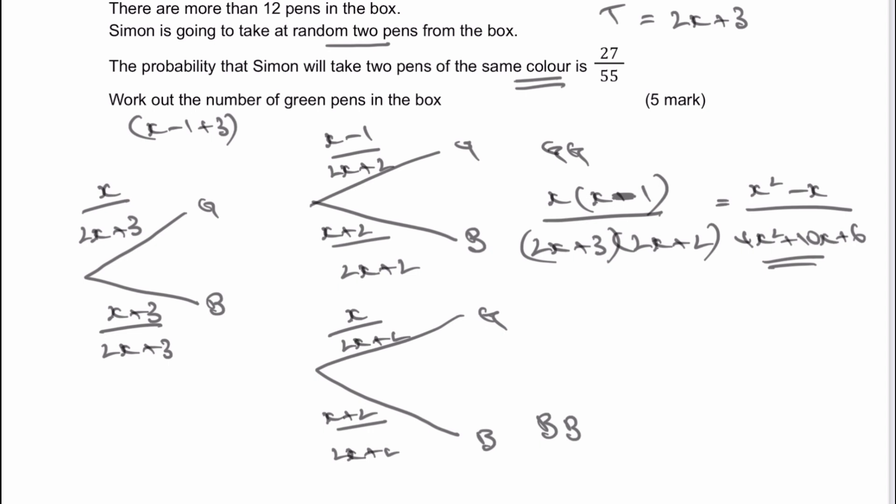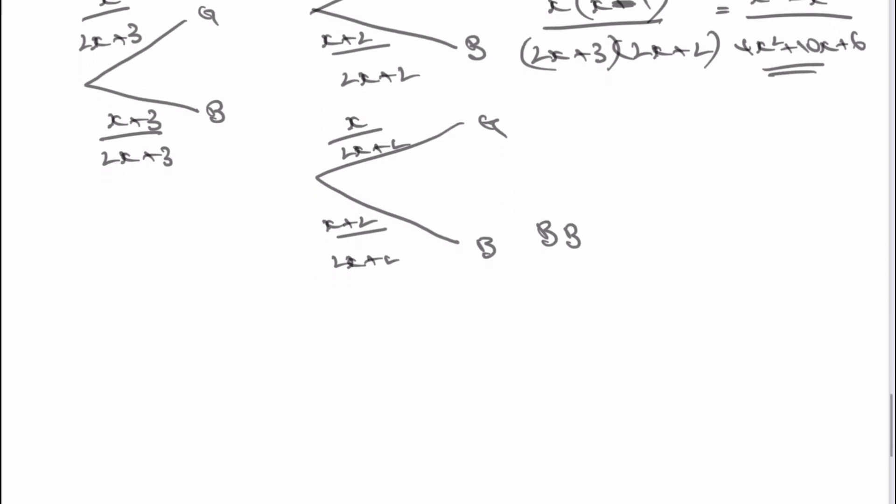What happens with blue, blue? With blue, blue, I'm going to multiply across the branches, so I'm going to have x plus 3 multiplied by x plus 2, and that's all divided by 2x plus 3, multiplied by 2x plus 2. When I multiply all of that out, I'm going to get x squared plus 5x plus 6, and again, all divided by the same denominator, which is 4x squared plus 10x plus 6.